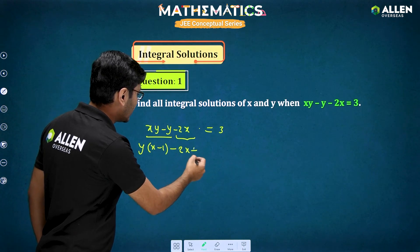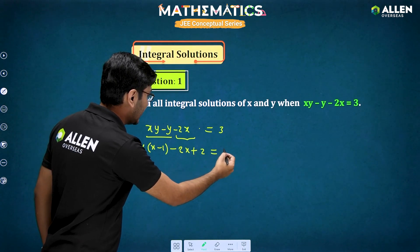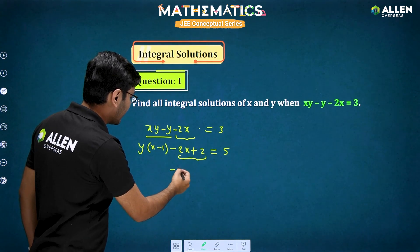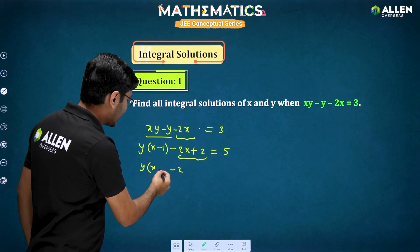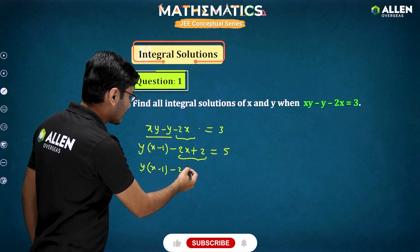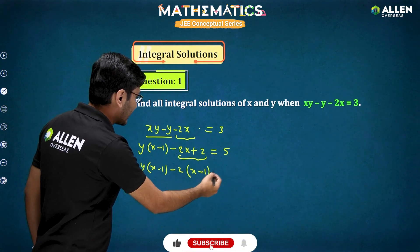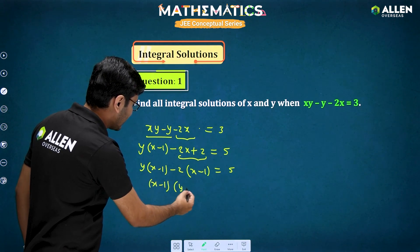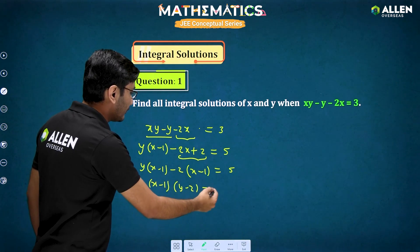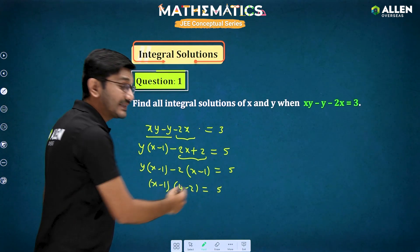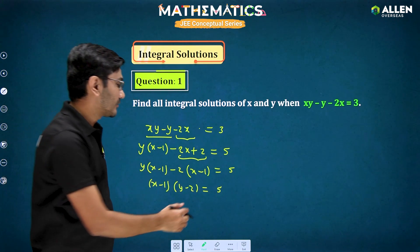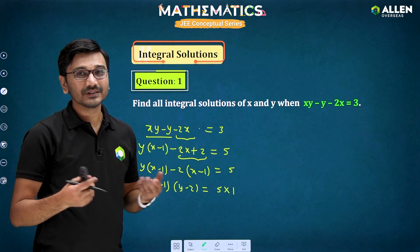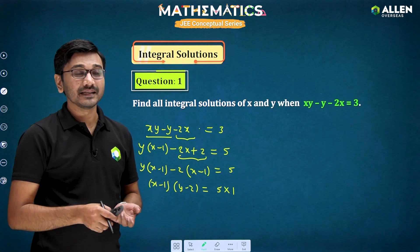If I add 2 on the left side and the right side, I get 5 on the right, and from the remaining terms I can take minus 2 common to get x minus 1 again. So I get one factor as x minus 1 and the other factor as y minus 2, and the product of these two factors is 5. The right side is 5, which can be factorized as 5 into 1. Now you have two factors on each side.